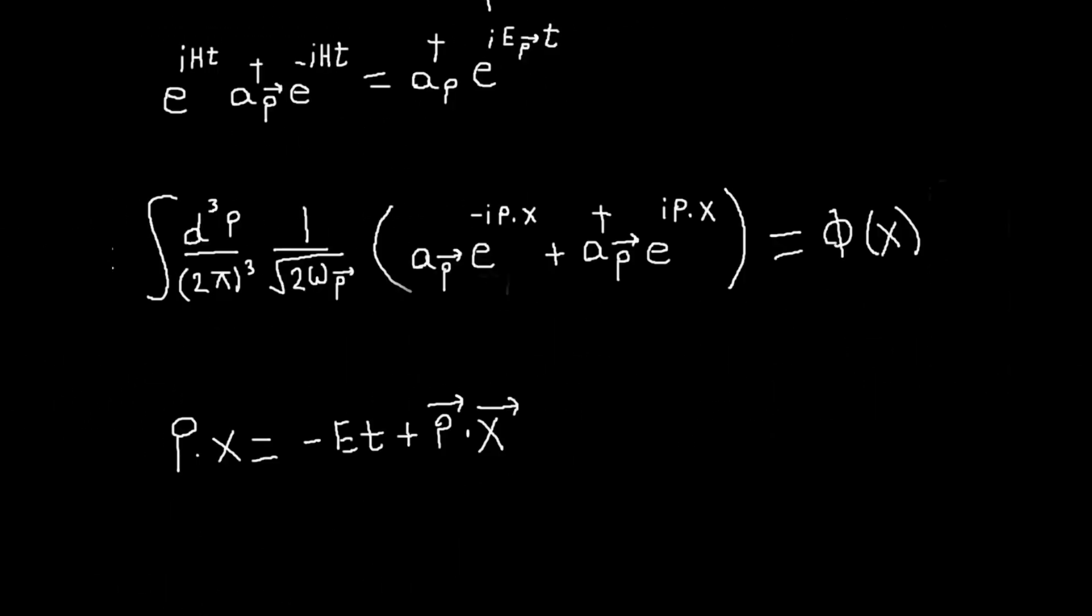The only reason for that is this P dot X is going to be our four vector dot product. So by definition, it has this minus the time part and plus the spatial. Oh, sorry. No, sorry. It should be the opposite of that. This should be plus. And this should be minus. Minus. Okay. And so that's why we have this minus sign here. So there's still a plus sign in this one associated with the spatial, P dot X. It's just that. Yeah.